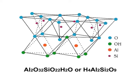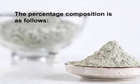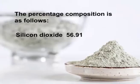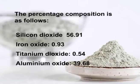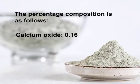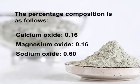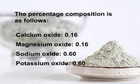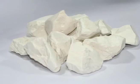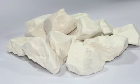Chemical constituent: chemically, kaolin is hydrated aluminium silicate with the chemical formula Al₂O₃·2SiO₂·2H₂O or H₄Al₂Si₂O₉. The percentage composition is: silicon dioxide 56.91%, iron oxide 0.93%, titanium dioxide 0.54%, aluminium oxide 39.68%, calcium oxide 0.16%, magnesium oxide 0.16%, sodium oxide 0.6%, potassium oxide 0.6% and water 12.6%. Natural kaolin usually contains small amounts of uranium and thorium, with octahedral sheets of alumina octahedra.